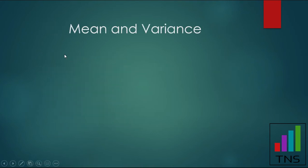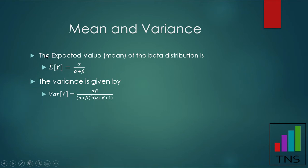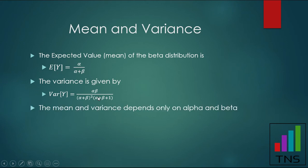Since we're on distributions, we also need to consider the center value — the mean — and how much variability the distribution has. The expected value of the beta distribution is simply alpha divided by alpha plus beta. The variance is similarly a formula of those two parameters. The key takeaway is that the mean and variance depend only on alpha and beta, which are either specified or estimated using whatever estimation method you choose.